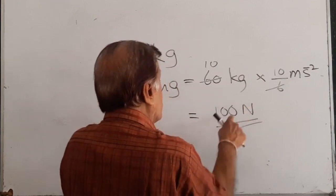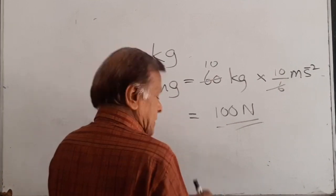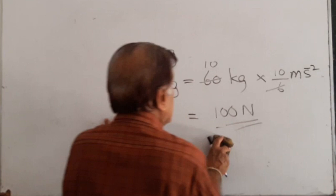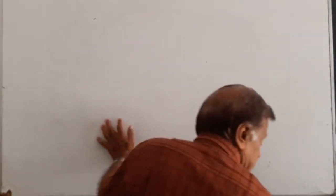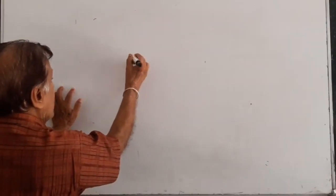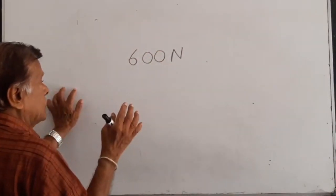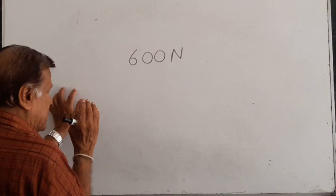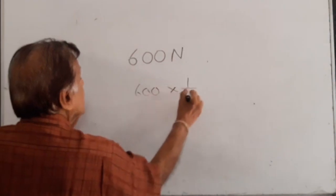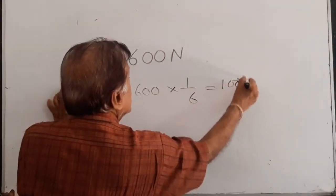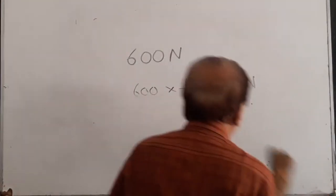So on the moon, as a question was given, these are very important. You can calculate it like this: weight of the body on the earth is 600 Newtons. Weight of that body on the moon is one-sixth of this, so that can be calculated easily.